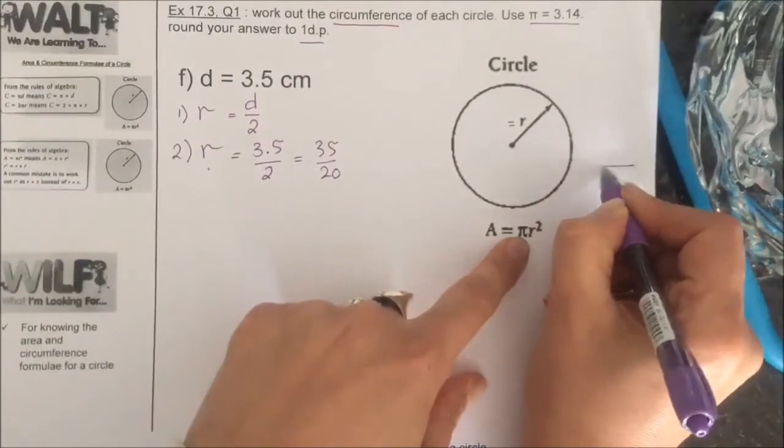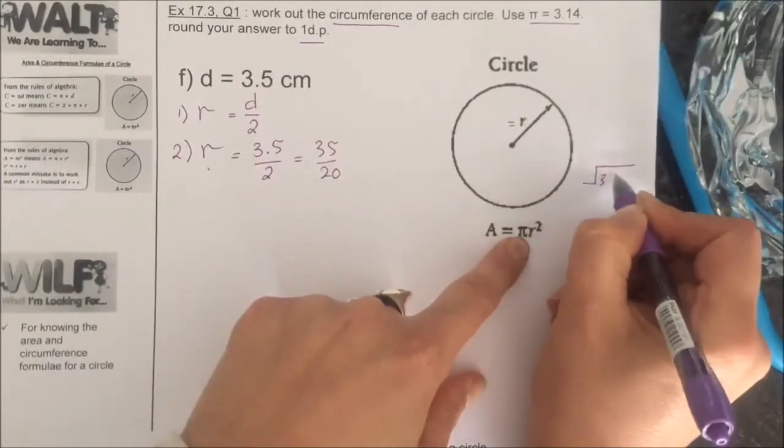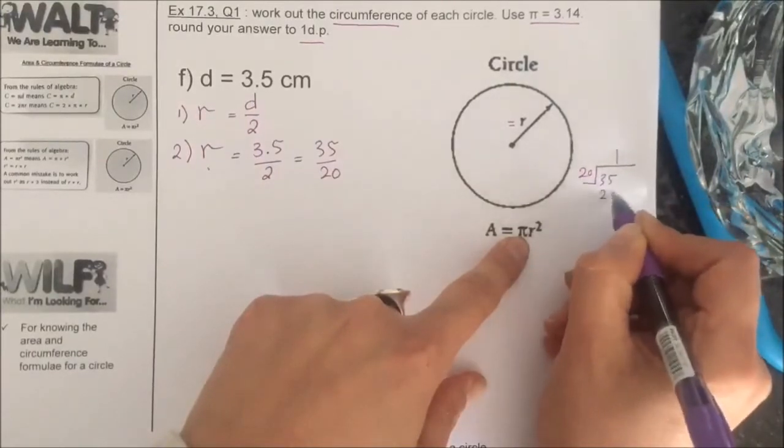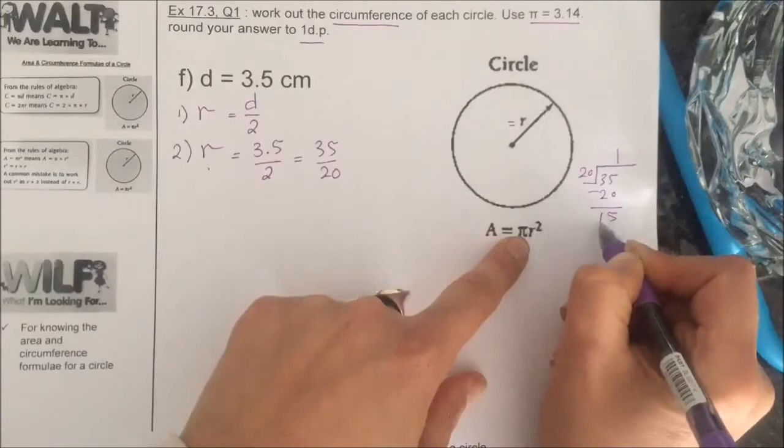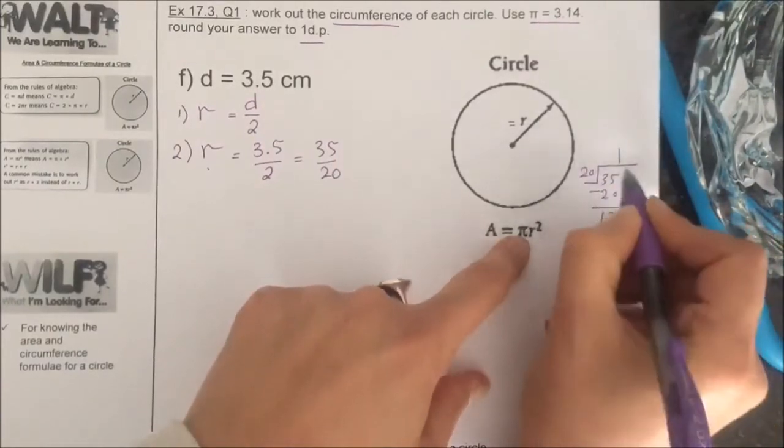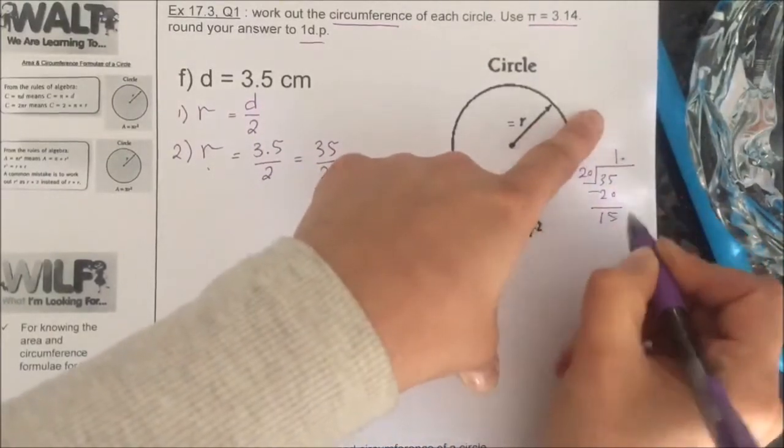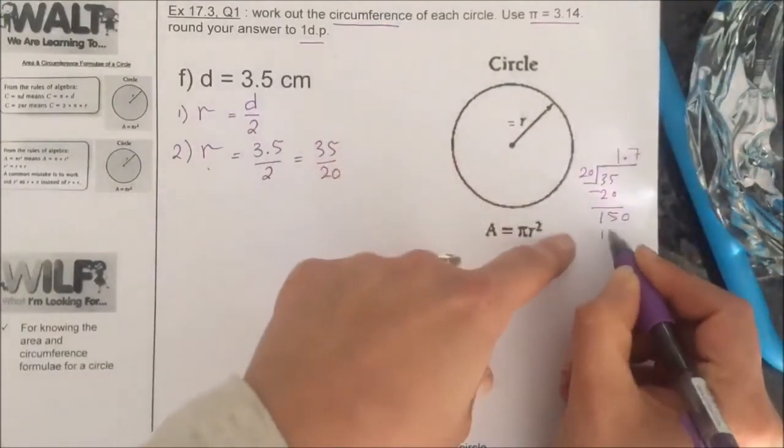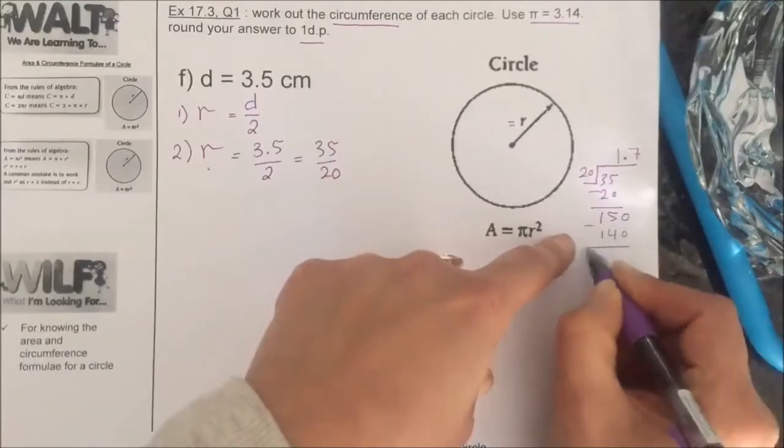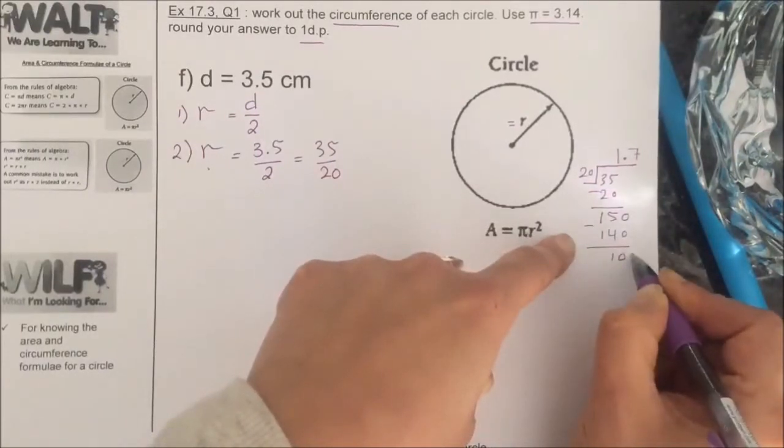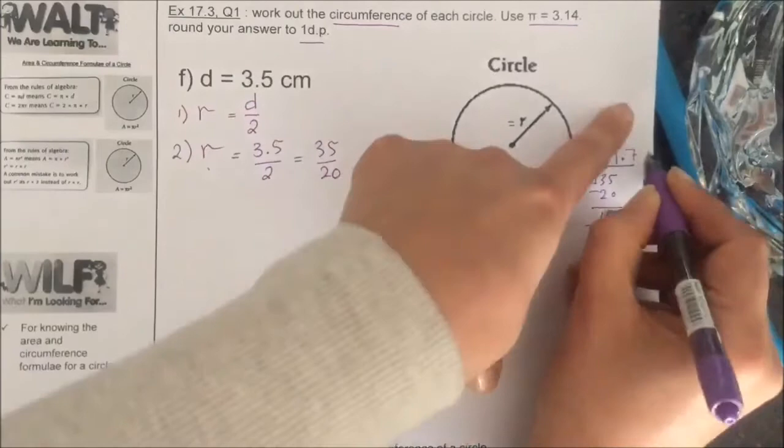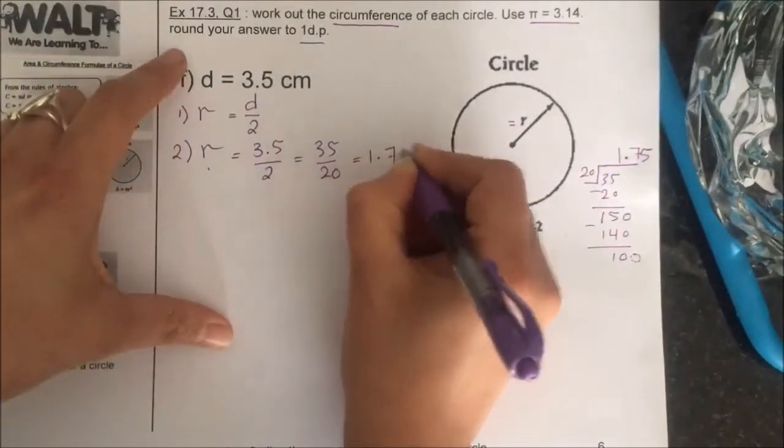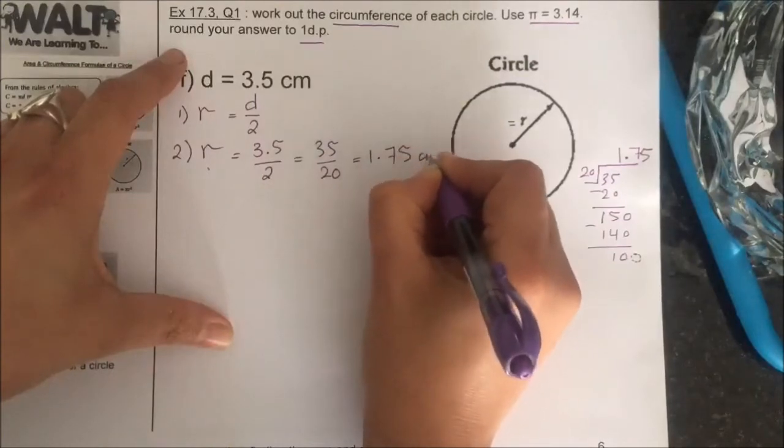So it's going to be 35 divided by 20: 1, 20, subtract 5, 1, 15 is less than 20. So, decimal, 0, 7, 140, subtract 10. Decimal is up there, so I can put a 0 here. And it's 5. So it's 1.75 centimeter.